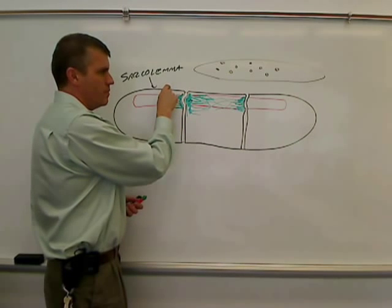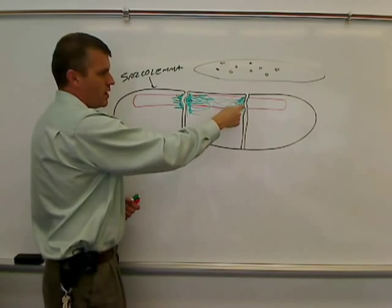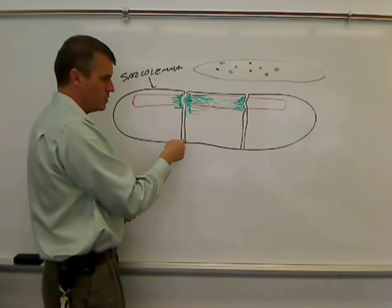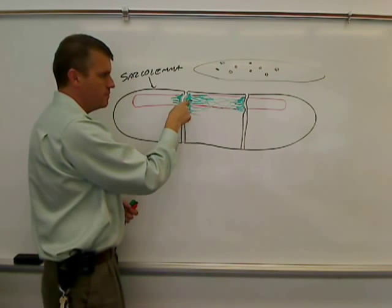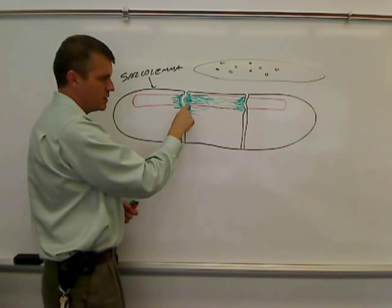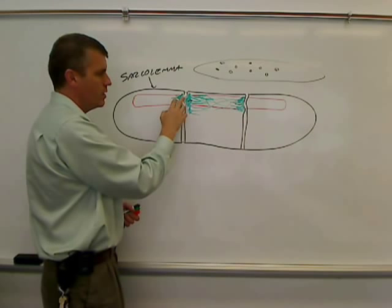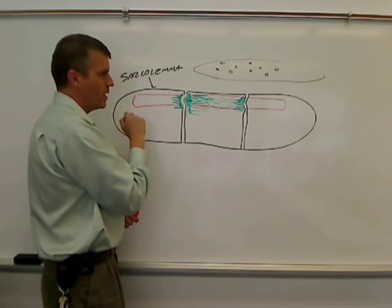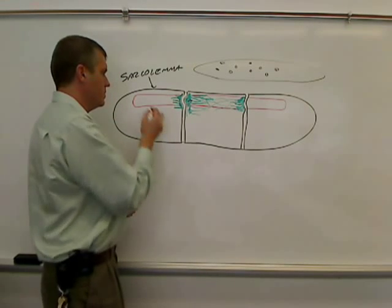So far we've got sarcolemma, the muscle fiber's cell membrane. We've got transverse tubules, an invagination of the cell membrane that runs through the cell. We've got sarcoplasmic reticulum. And of the sarcoplasmic reticulum, we know what cisternae are now. And we know what the triad is. We know what myofibrils are. These long collections of muscle fibers.